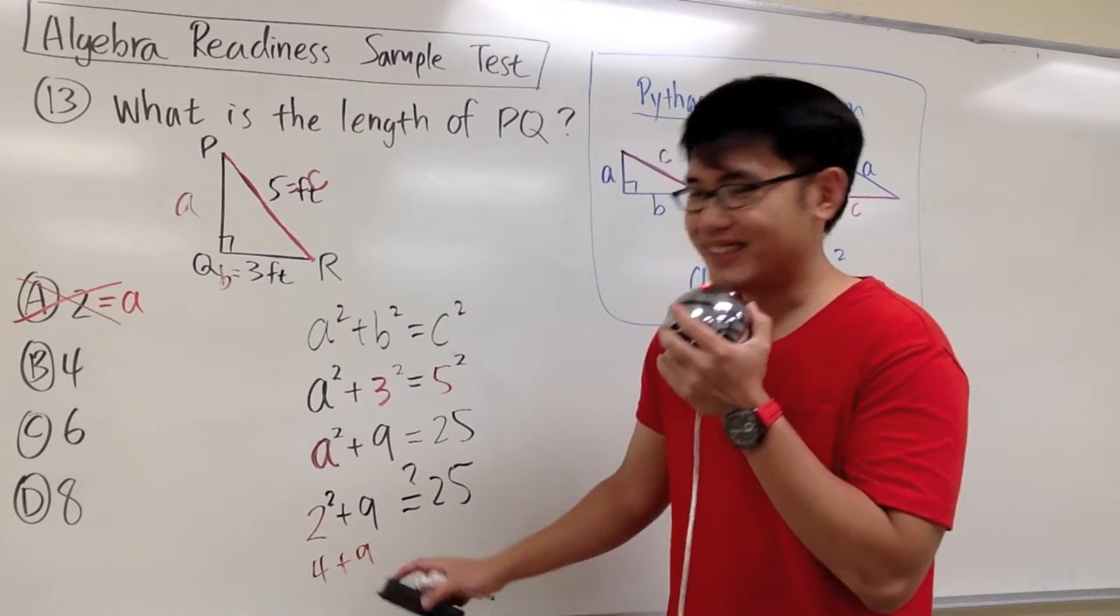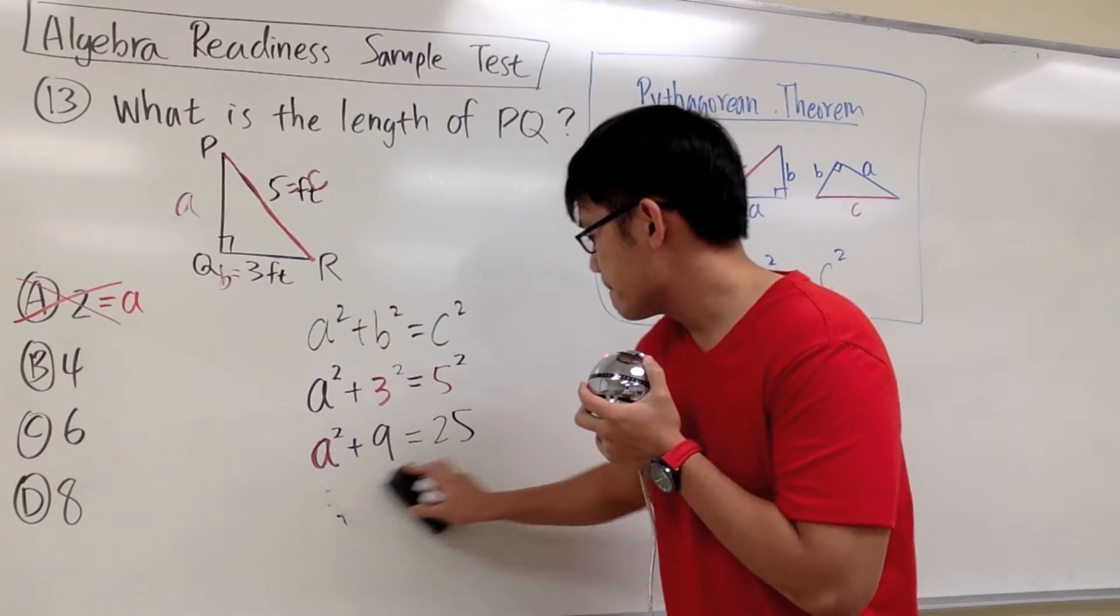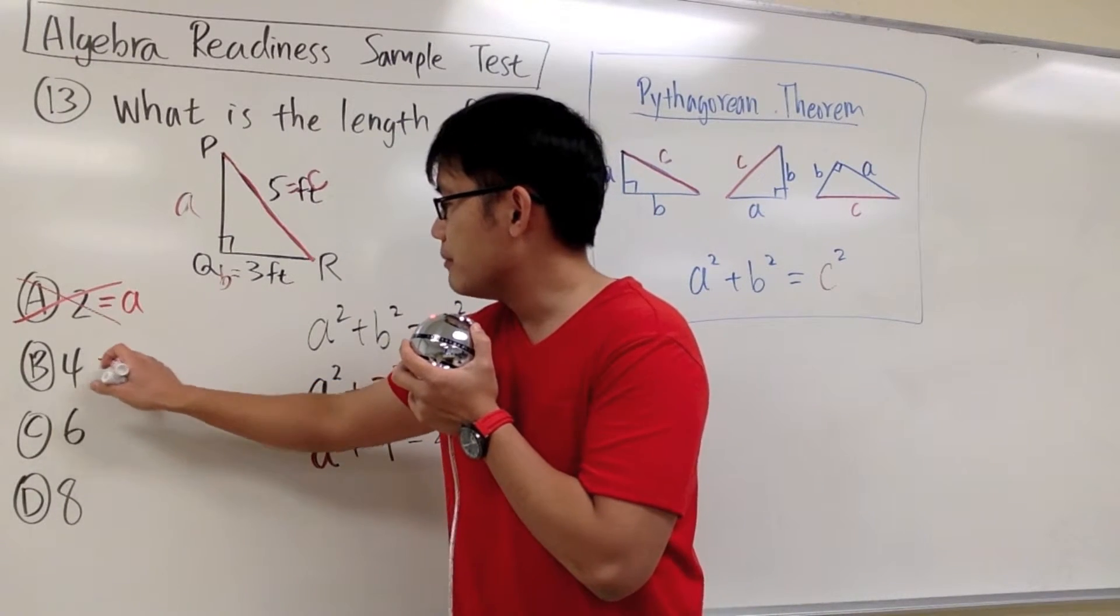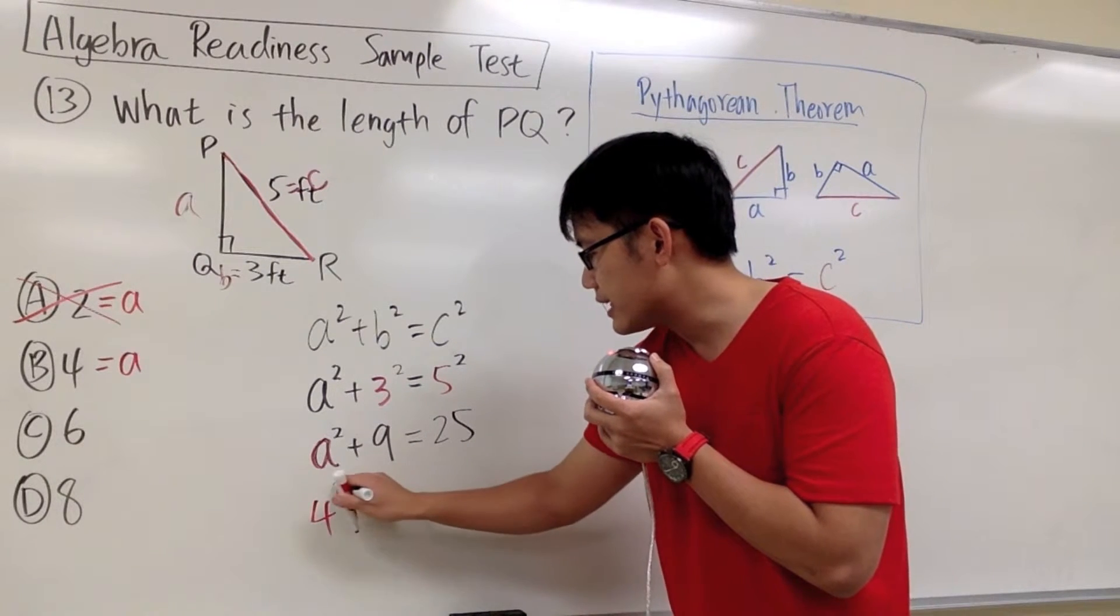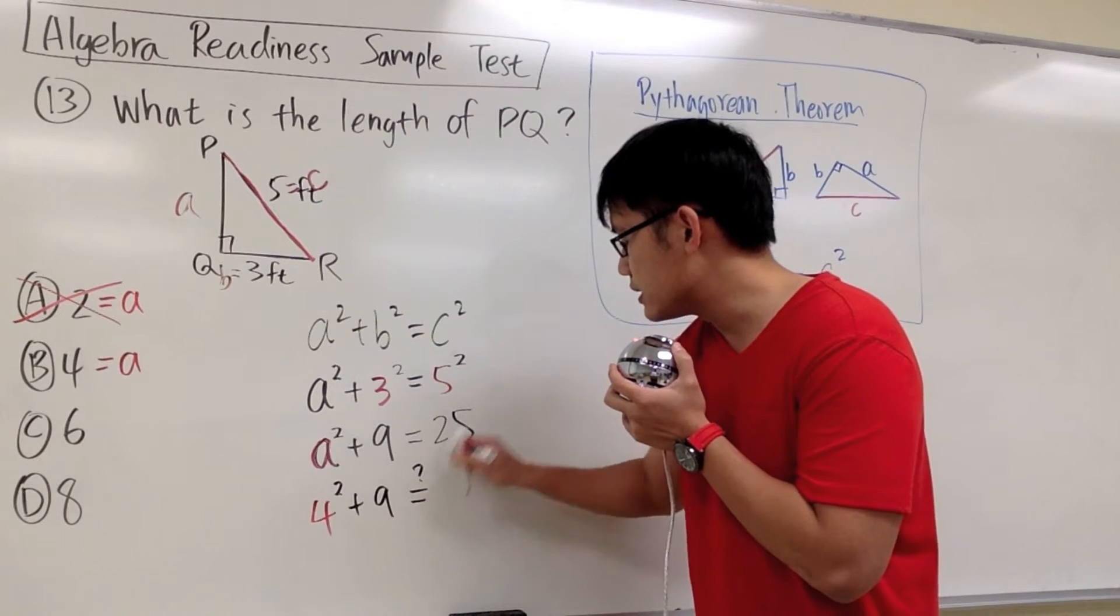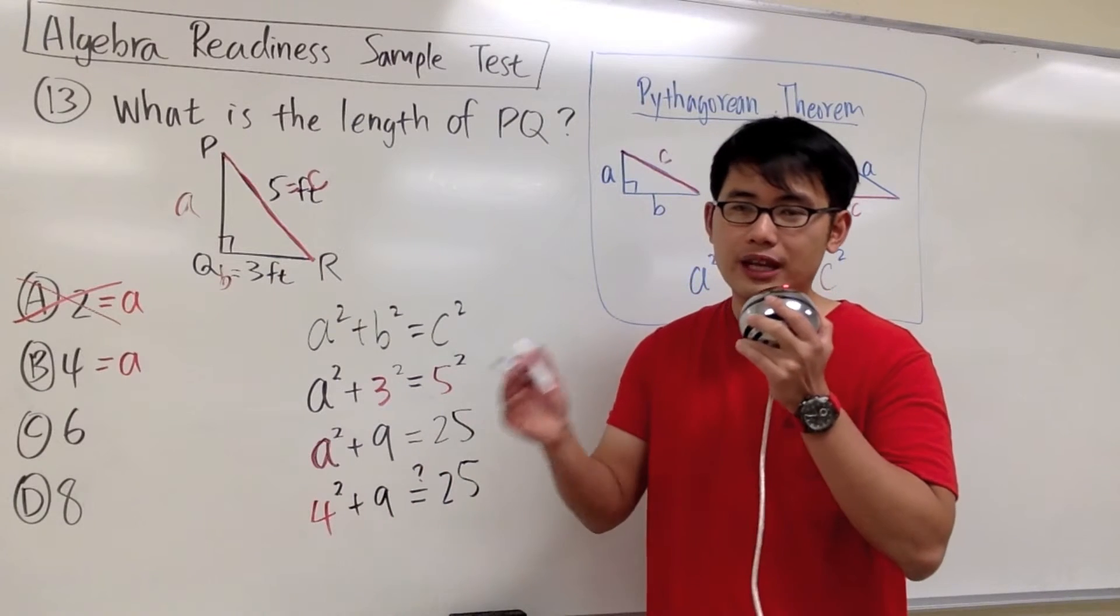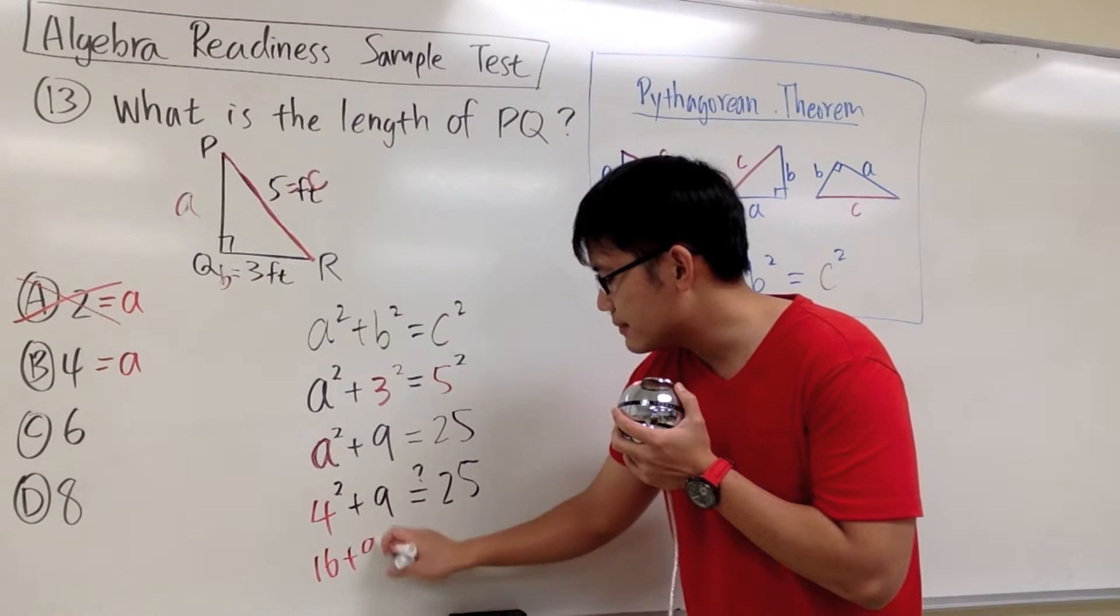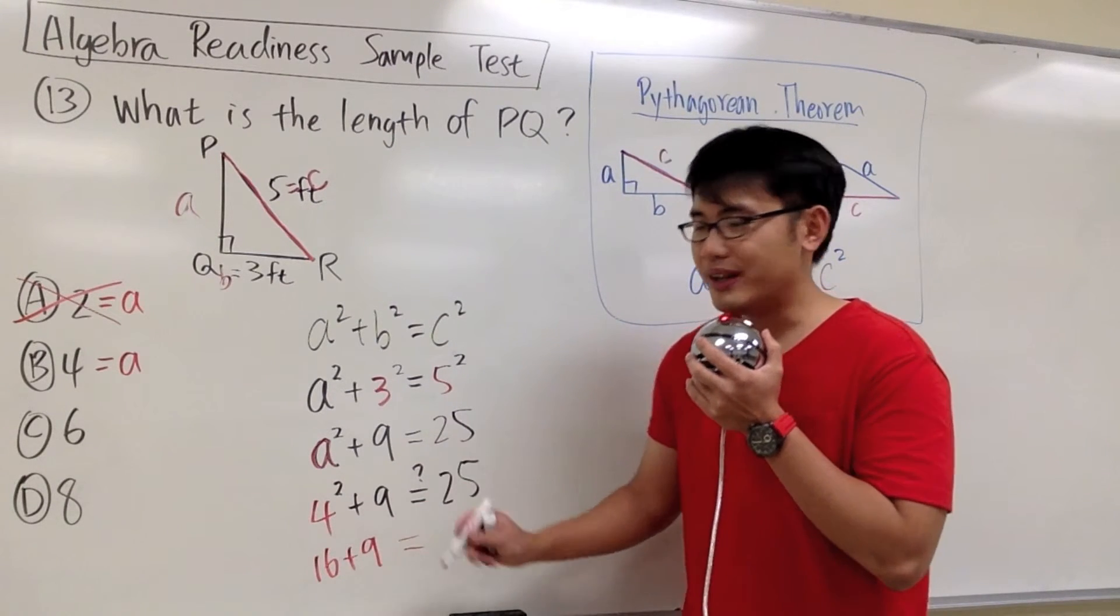We have three more tries. Next, I would like to pick answer choice B, 4. That means I'm going to plug in 4 into this A. So I'm going to get 4 to the second power and then plus 9 to that. Do I end up with 25? And for the 4 squared, that means 4 times 4, we have 16. And if we add 9 to that, you see that 16 plus 9, we do end up with 25.